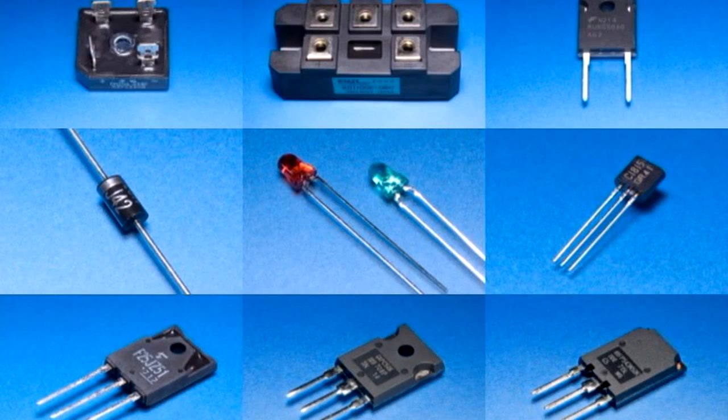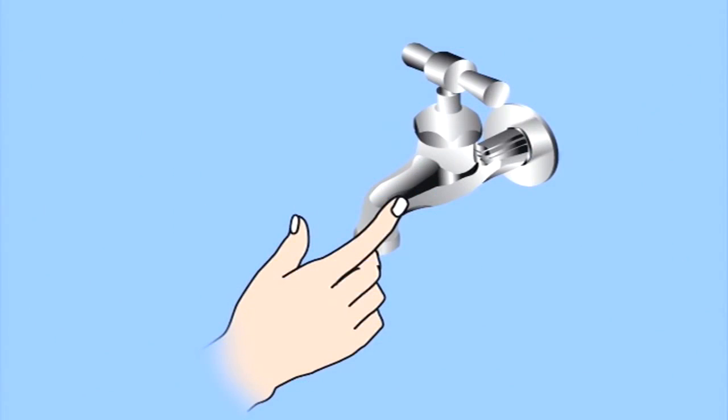To prevent electrostatic destruction, it is necessary to remove static electricity from the body prior to handling a semiconductor device or electronic circuit board. It is easy to rid yourself of static electricity. One simple method is to touch a tap with your bare hand.